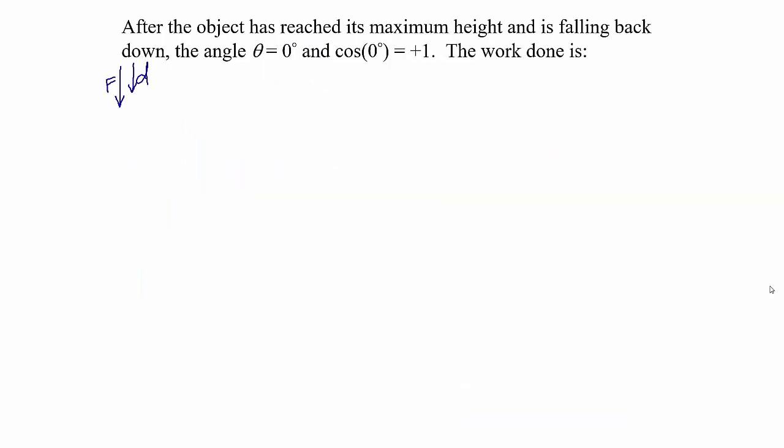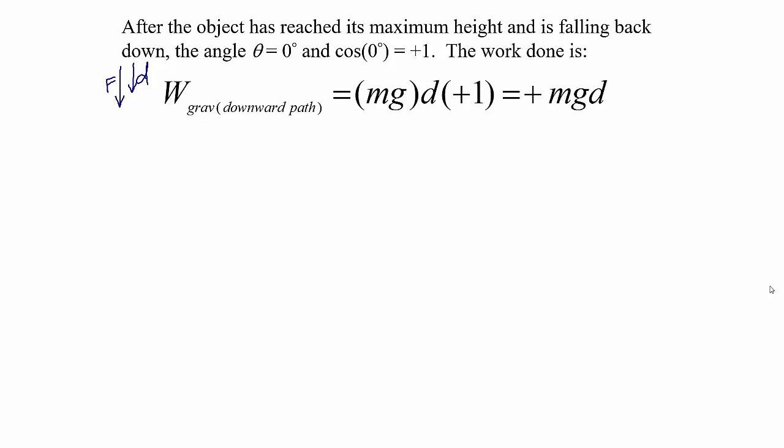As something starts to move back downward, the force of gravity is downward and the motion is downward. So in this case, the angle between the force and the displacement is 0 degrees. The cosine of 0 degrees is positive 1. So the work done for something falling straight down is the force of gravity mg times the vertical distance d times positive 1.